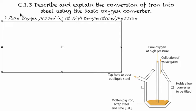In CDOT 1.3, we're going to describe and explain the conversion of iron into steel using the basic oxygen converter. So we have a picture of the basic oxygen converter right here. And what you see here is the oxygen is being put in at a high pressure. And this is pure oxygen, so we're not blowing in just air like we might do in the blast furnace.